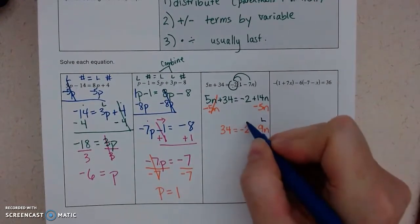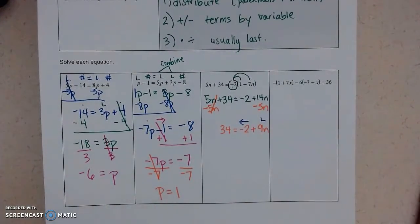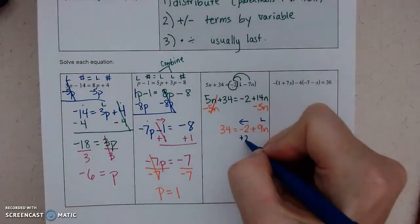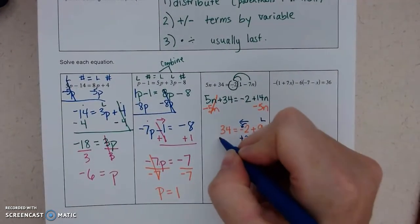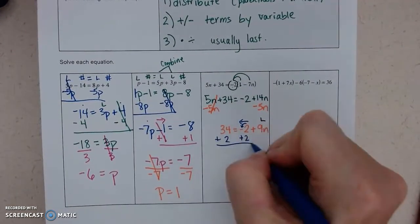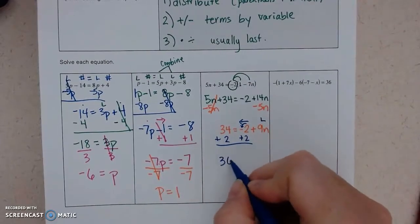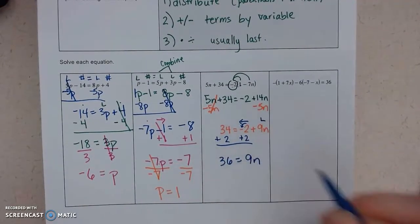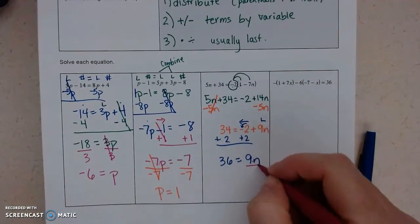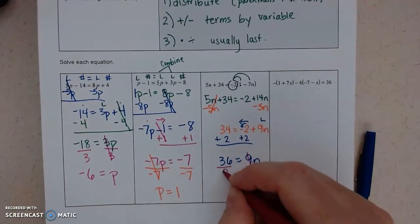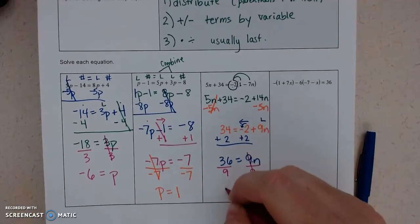Now, my letter is on the right side, so I have to move the number to the left. So we're going to add 2. You always look in front to see what operation you need to do to move it. So 36 equals 9n. And then those are being multiplied, so we're going to divide. So n equals 4.